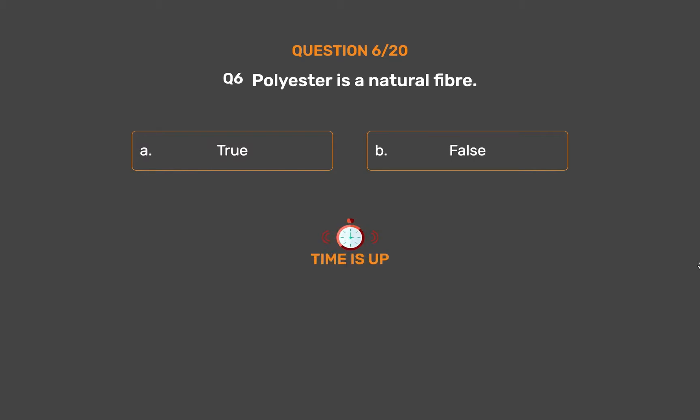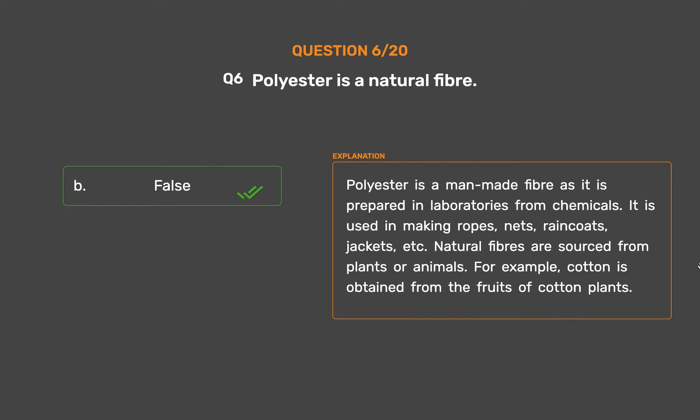The correct answer is Option B, False. Polyester is a man-made fiber as it is prepared in laboratories from chemicals. It is used in making ropes, nets, raincoats, jackets, etc. Natural fibers are sourced from plants or animals. For example, cotton is obtained from the fruits of cotton plants.